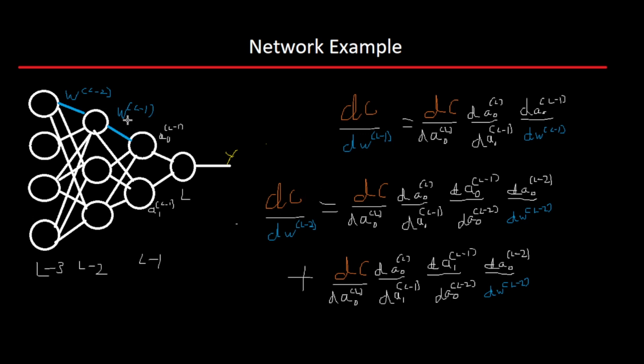That's how you solve for the derivative of the cost with respect to W^L-1. Now, with the example of the derivative of the weight L-2, it's basically the exact same thing except there's a couple more steps where you have to go back another perceptron, so you have to find the derivative of A0 of L-1 with respect to A0 of L-2. And then, since there are two paths in which this weight will affect the cost, you have to add the values of both paths.